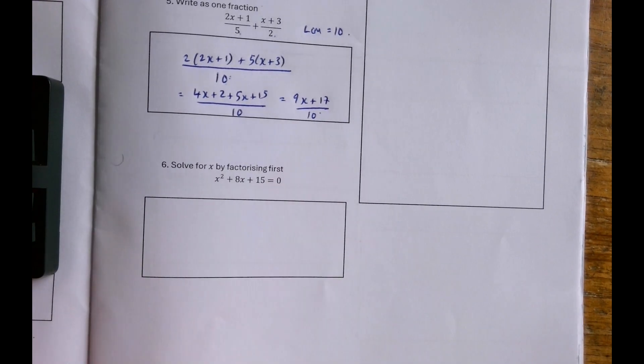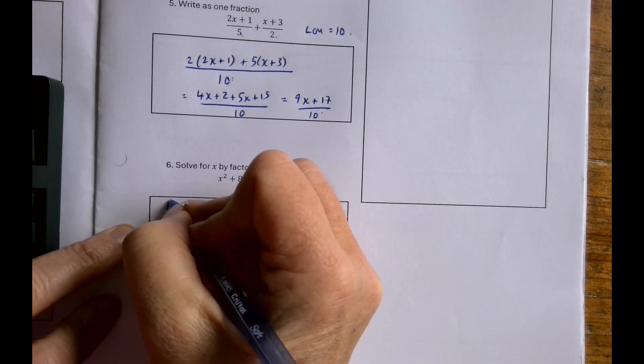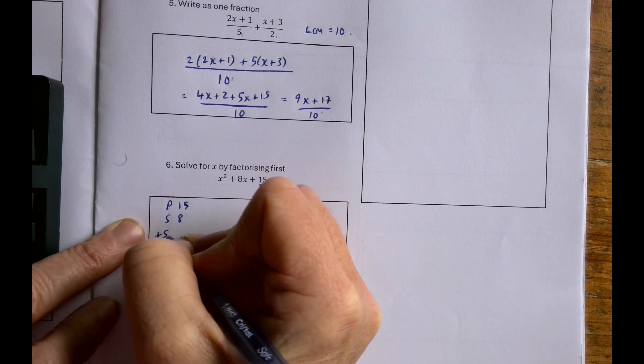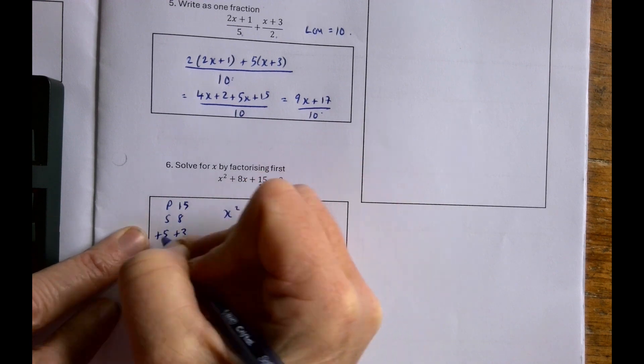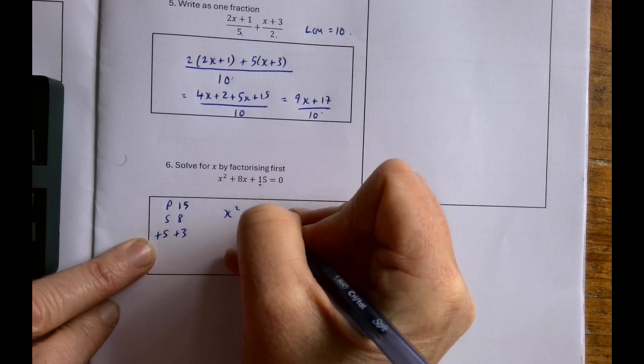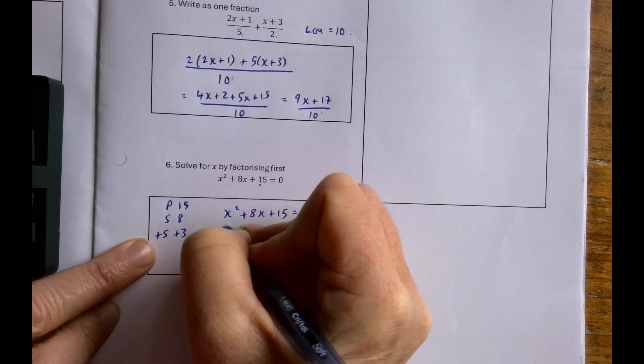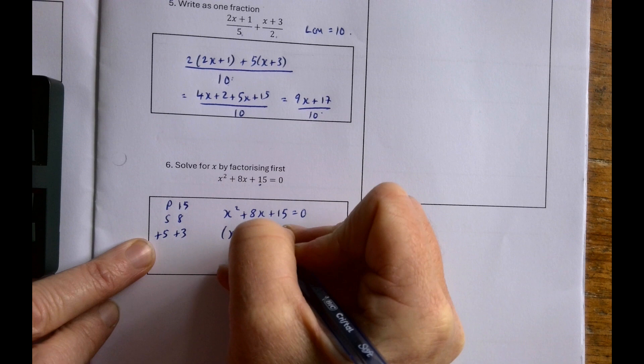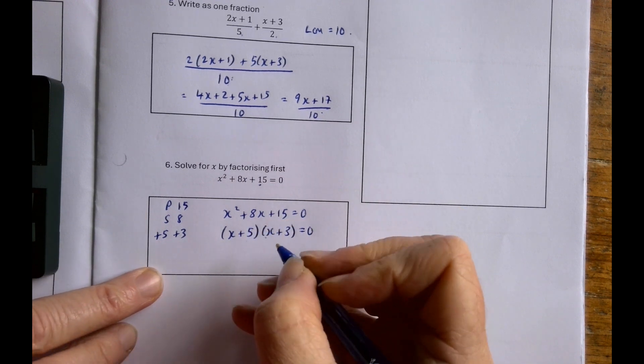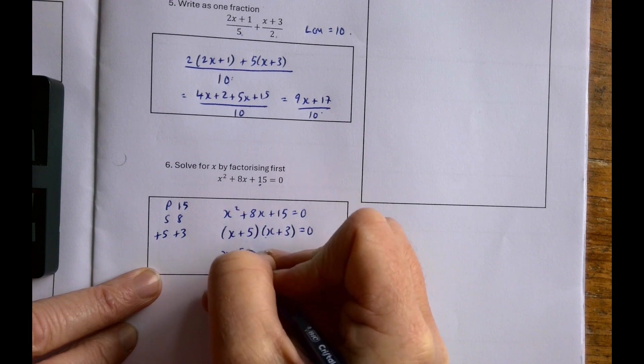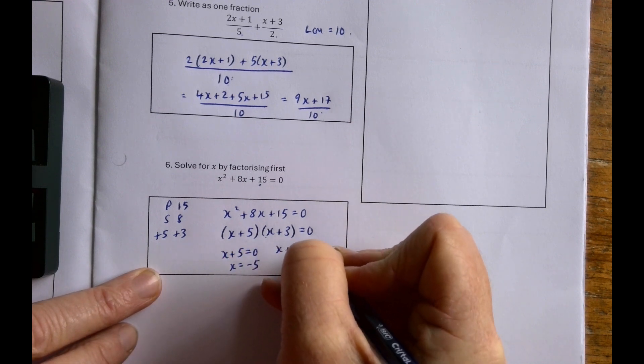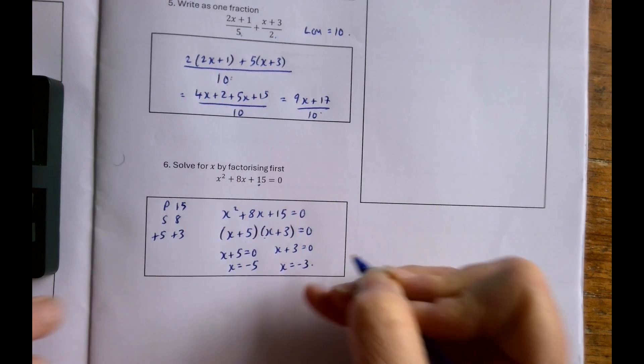Solve by factorizing first. So product is 15 there and the sum is 8, so plus 5 and plus 3, because they add together to give 8 and multiply together to give 15. So I'm going to go straight to my brackets: x plus 5 by x plus 3 equals 0. If these two multiply together to give 0, then either x plus 5 equals 0, x equals minus 5, or x plus 3 equals 0, x equals minus 3.